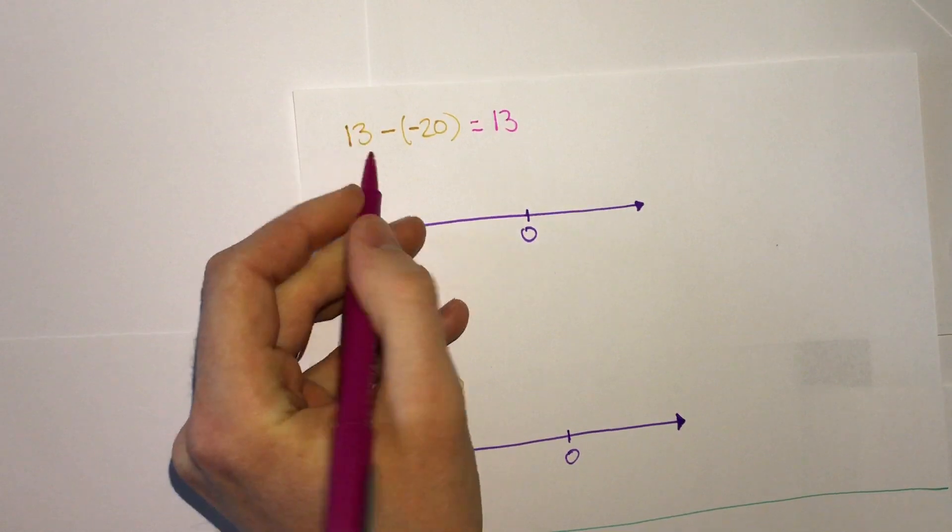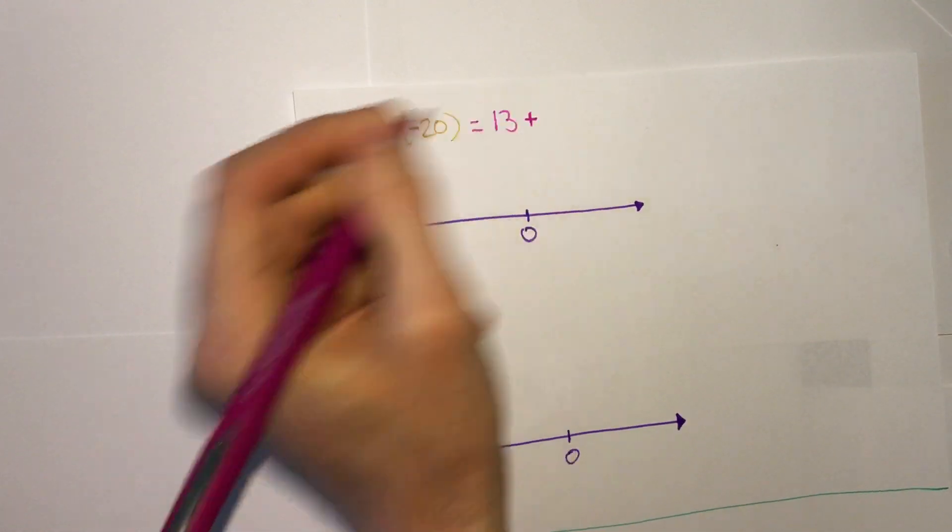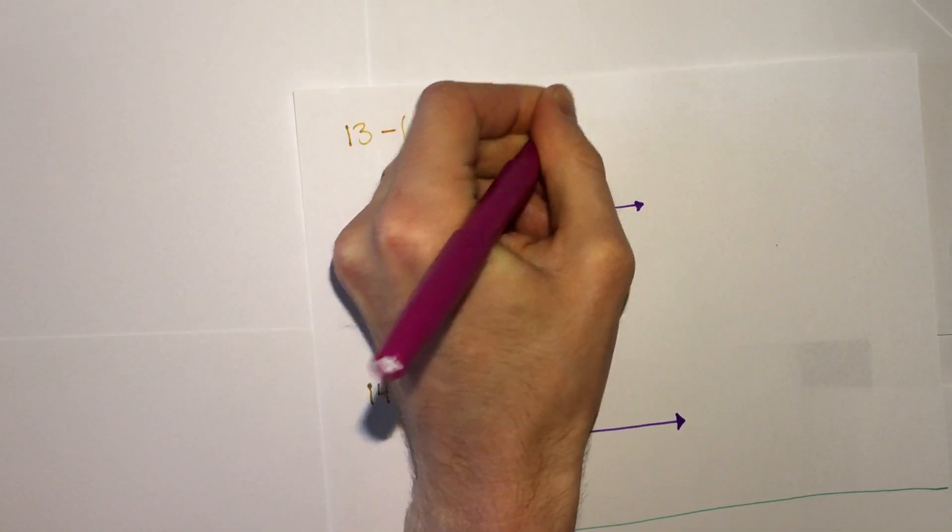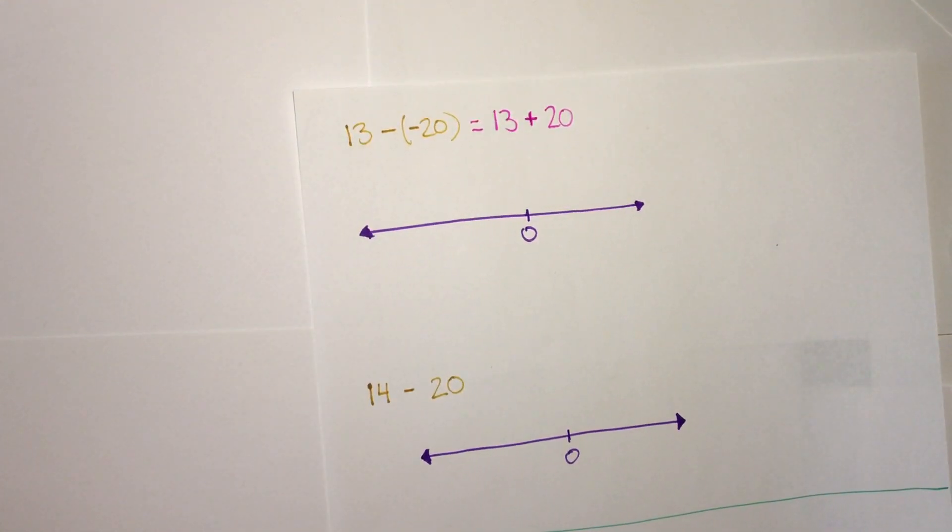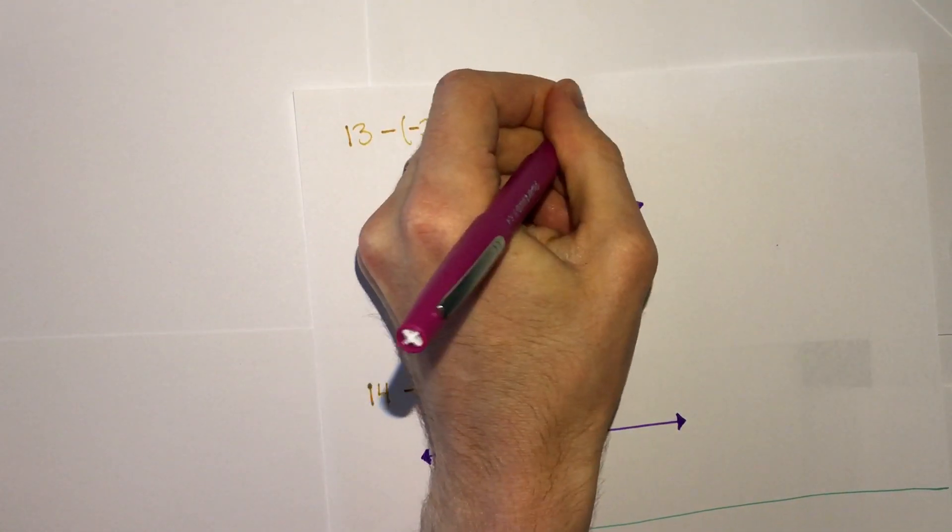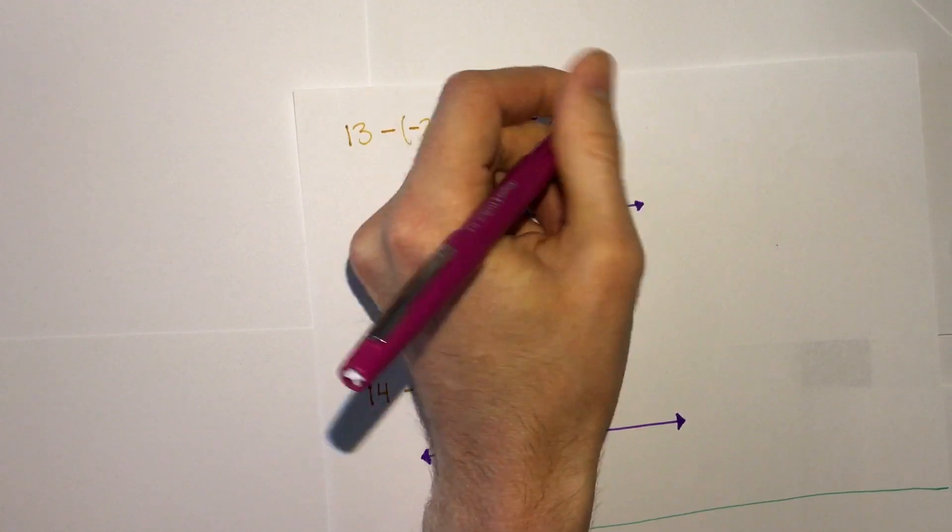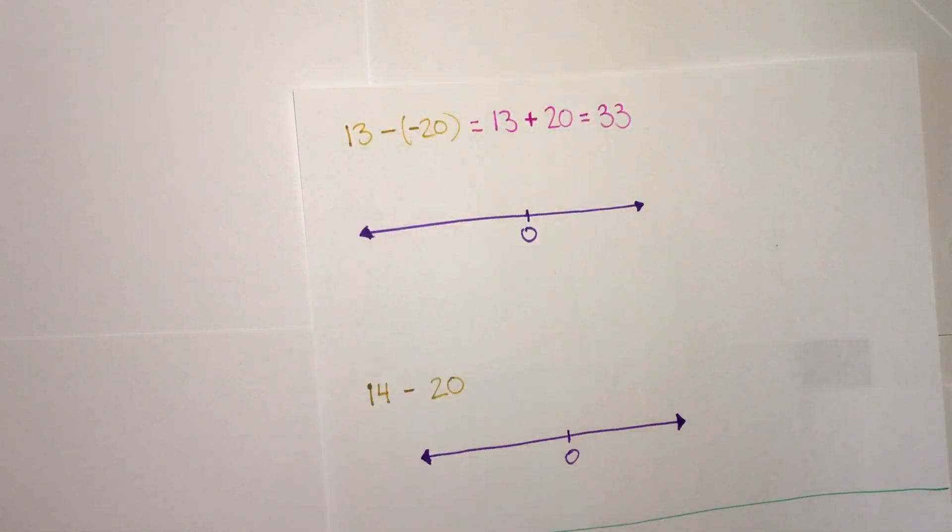Keep 13. Change the subtraction to addition, and change the negative to a positive. Well, here we have 13 plus 20. Simply 33. We can add that out the long way, or just if you know it, add it and it's 33.